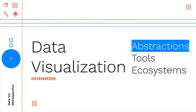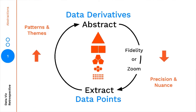Okay, abstractions. When we're working with data visualizations and creating them, we start off with data points and think of different ways to abstract our visualizations up to different layers. As we abstract up, it's easier for us to look at patterns and themes; as we go down, it's more about precision and nuance. So let's jump into an example.